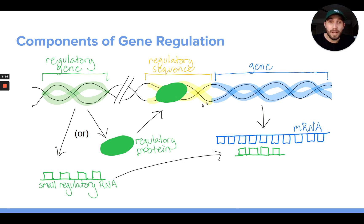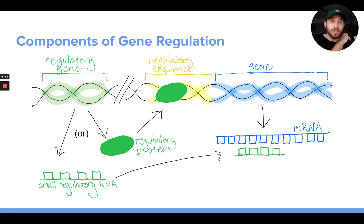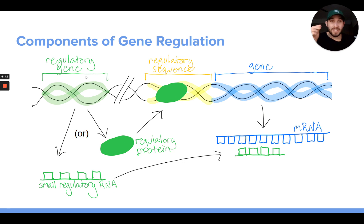There are also things called regulatory sequences. Regulatory sequences are not genes — they don't have instructions to produce something, but they are important pieces of DNA. These sequences are regions in your DNA that proteins can bind to. Certain types of proteins called regulatory proteins have a specific structure and shape that allow them to bind to a specific sequence in your DNA. Regulatory genes are specific types of genes that produce these regulatory proteins, and those regulatory proteins will then bind to your DNA.